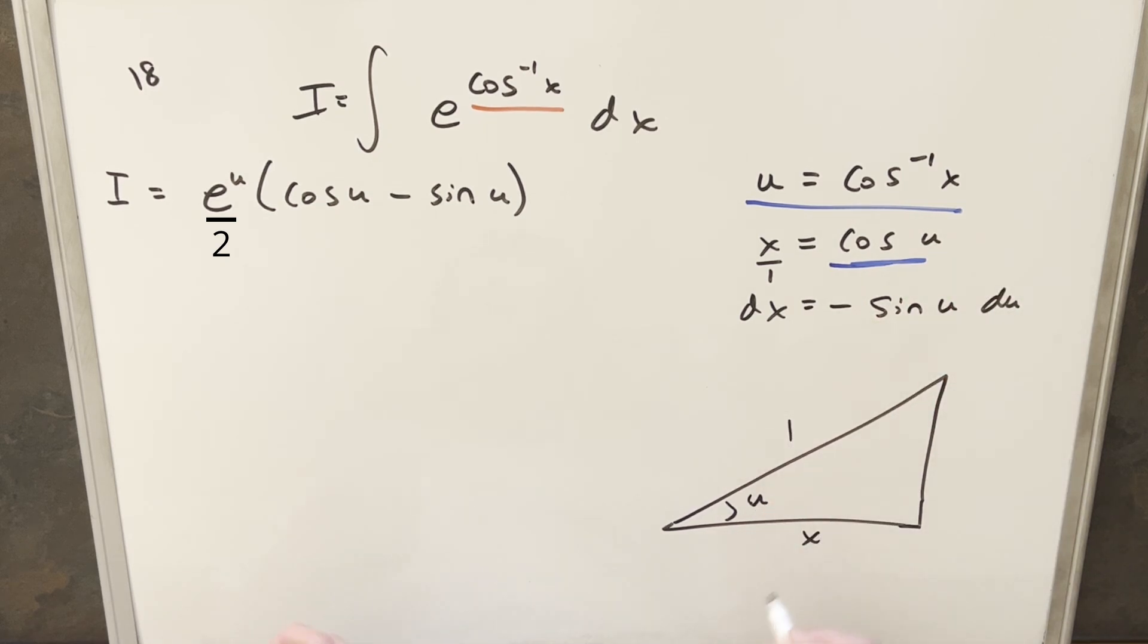I can write this as x over 1, cosine is adjacent over hypotenuse. So we can write this as x over 1. But then if we use the Pythagorean theorem, we can find our third side. That's just going to be 1 minus x squared. And so then we can just use this triangle to find our sine of u. So sine of u is going to be opposite over hypotenuse. So that's just going to be square root of 1 minus x squared.